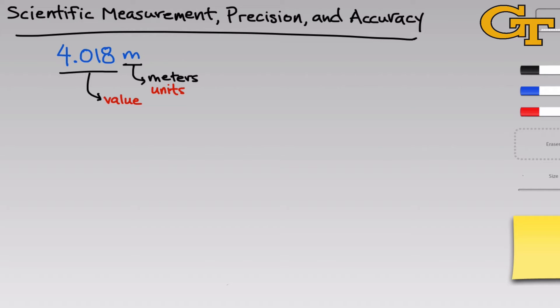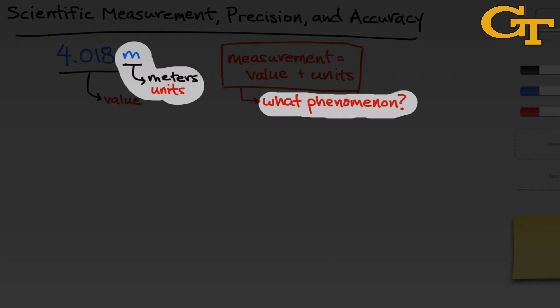And the second, the letter m, refers to meters and represents the units of the measurement. We can think of every scientific measurement as being composed of a value and of units. And each of these answers a particular question. The units are associated with the question, what phenomenon belongs to this measurement? What phenomenon is measured by the measurement? In the case of 4.018 meters, meters is a unit of length.